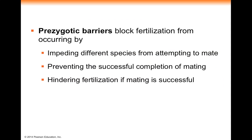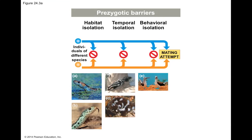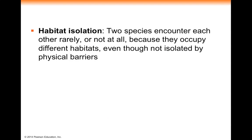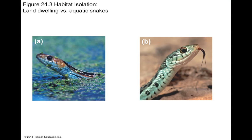Pre-zygotic barriers block fertilization by impeding mating attempts or preventing successful completion of mating. One type is habitat isolation — two species don't encounter each other because they live in different habitats. For example, snakes that spend most of their life in water are not going to frequently encounter terrestrial, land-dwelling snakes. If they don't encounter each other, they won't have opportunities to mate.